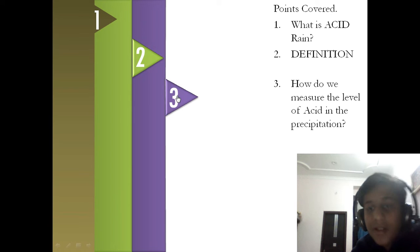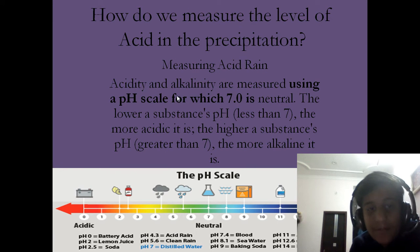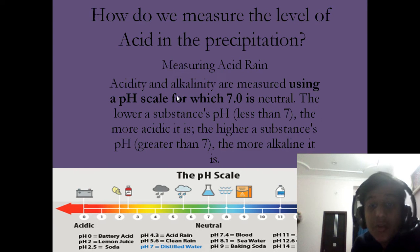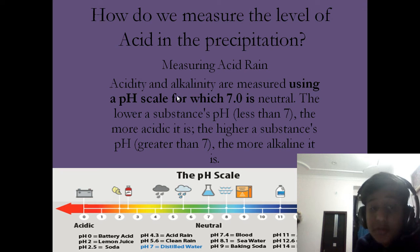How do we measure the level of acid in the precipitation? Acidity and alkalinity are measured using a pH scale for which 7.0 is neutral. The lower a substance's pH — less than 7 — the more acidic it is. The higher a substance's pH — greater than 7 — the more alkaline it is.